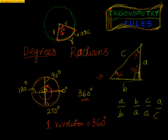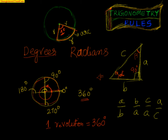Now let us go back to the radian definition again. What we are interested in is: what is a radian and how to establish the relationship between degrees and radians. If you have a sector made up of two radii R and an arc of length R, then the angle made at the center of the sector is equal to one radian.